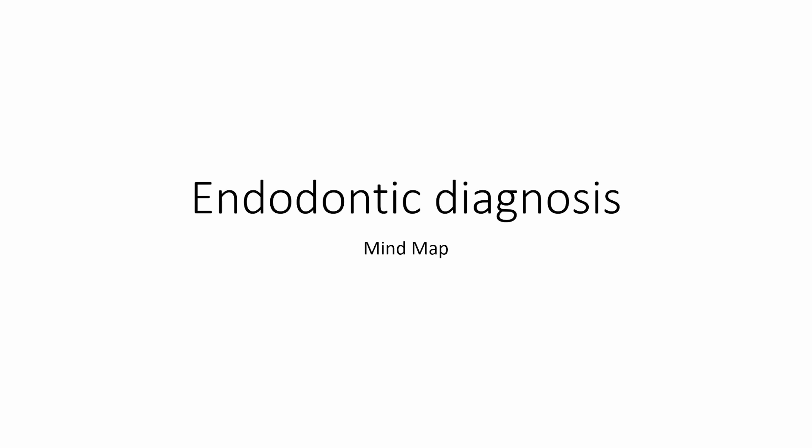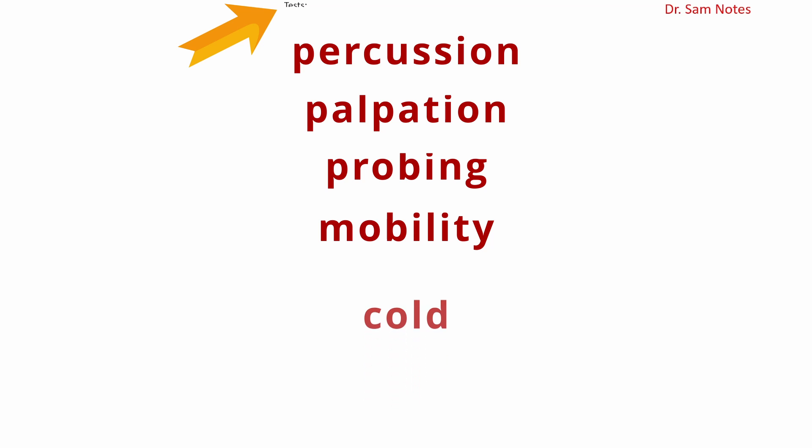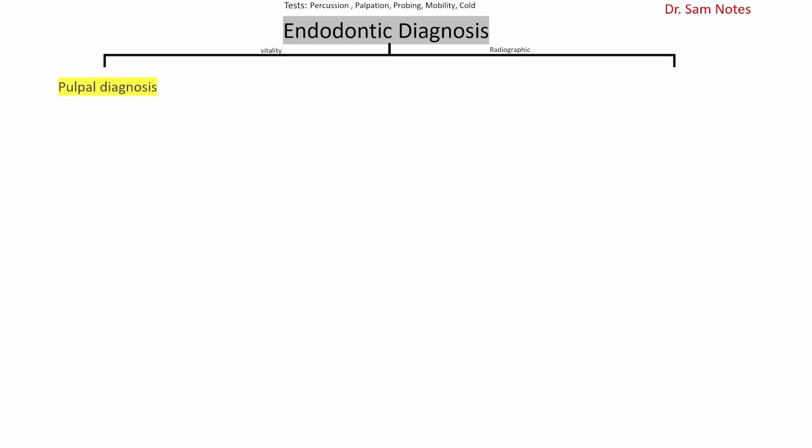Endodontic diagnosis requires certain tests: percussion, palpation, probing, mobility, and cold tests. These tell us about the vitality of the teeth in question. Endodontic diagnoses are divided into two types: one based on the vitality test, which is the pulpal diagnosis, and one based on radiographic evaluations, which is the apical diagnosis.